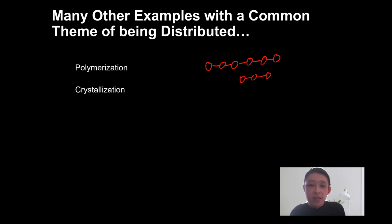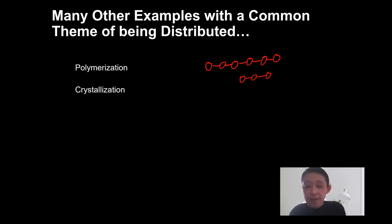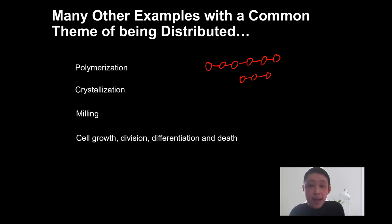Also in crystallization, as mentioned, in pharmaceutical drug crystal production the size and shape of the crystal are very important. Not every crystal in your broth will have the same shape and size, so the distribution matters. We can calculate properties of that distribution — for example, the average size or average shape, whether number-weighted or weight-based. Once we have the distribution, we can calculate all the different properties of the particle. Similarly, in milling the common theme of being distributed applies.